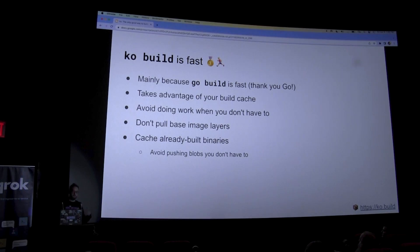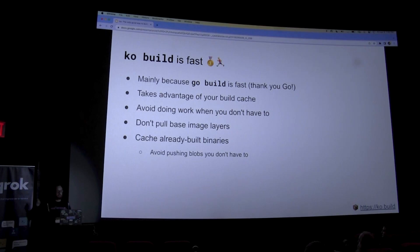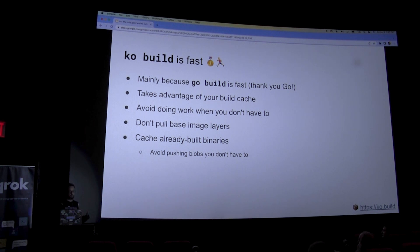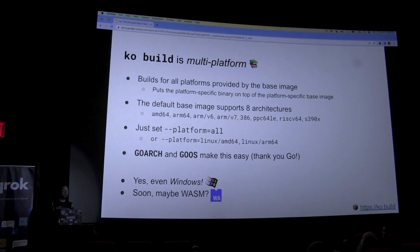Ko takes advantage of your build cache — there are a ton of tutorials about how to make Dockerfile builds faster by sharing your build cache with the host, and it's just a ton of pain and toil. We just get rid of that. Ko also avoids doing work when it doesn't have to: if it can detect that it doesn't even have to run go build, it won't. If it runs go build and decides it has already built this binary before, it will not push a new binary to the registry. When it pushes, it will see if the registry already has it and not push it if it already does. All of these things mainly come down to how good Go makes it for us — Go has reproducible builds by default, go build is very fast and has a build cache, and we just take advantage of it.